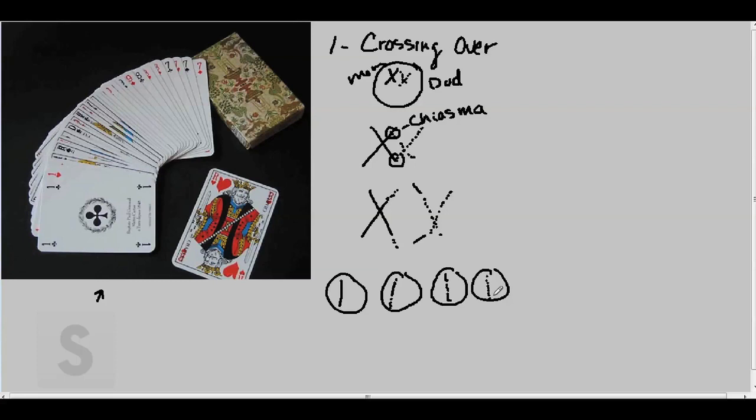These will then go on to form the egg and the sperm. Some will look more like mom, some will look more like dad, and some will look like a complete mix. This is our first shuffle of the genetic deck. Let's talk about the second one.